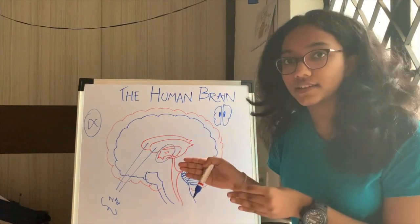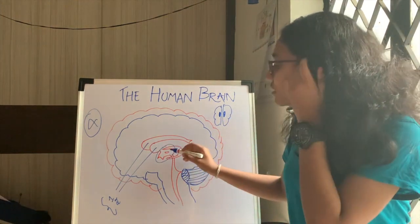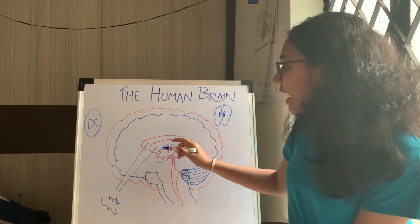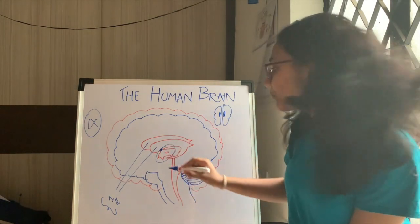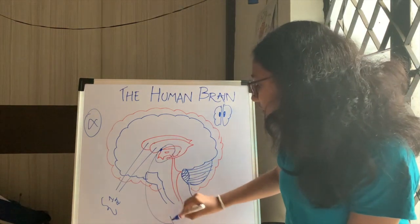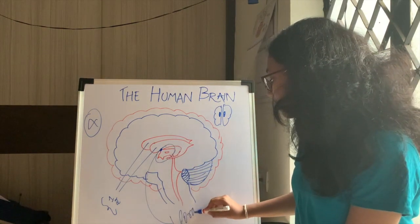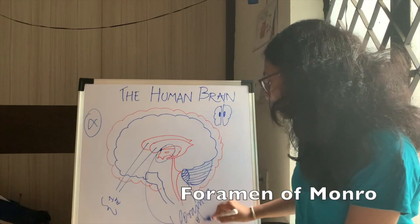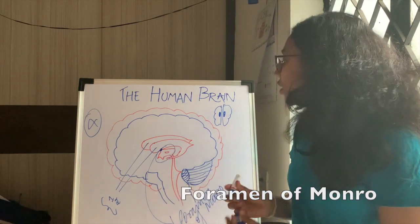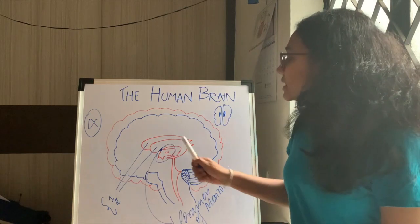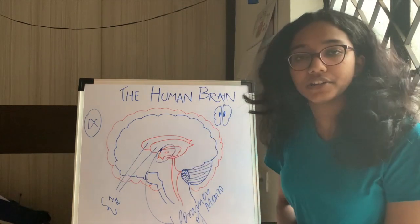Most questions that surround ventricles are regarding the location of the third ventricle — it's present in the diencephalon. The third ventricle is directly attached to the first two ventricles by a small opening called the foramen, known as the foramen of Monroe.